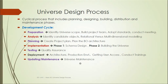Updating and maintenance is the phase where, if any modification is required after deployment to production, we identify the changes and make them as per the requirement. This concludes the development cycle related to the universe design process.